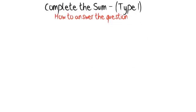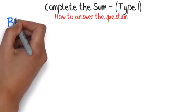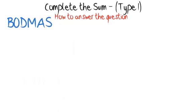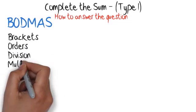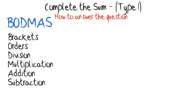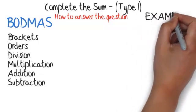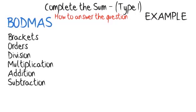How to answer the question: you need to find the missing number that answers both sides of the sum. You will need to remember the order used to answer math sums — the order is BODMAS: Brackets, Orders, Division, Multiplication, Addition, Subtraction. This means if there are any sums in brackets you should answer that sum first, then look for orders to complete, i.e. 4 squared, then complete any division, then any multiplications, then additions, then subtractions.